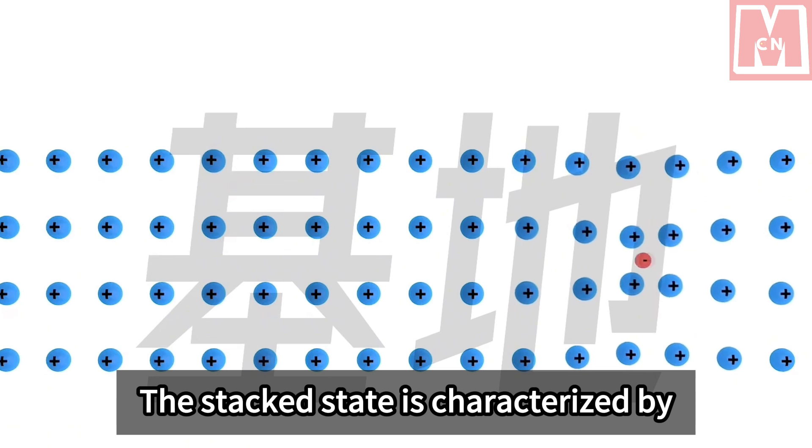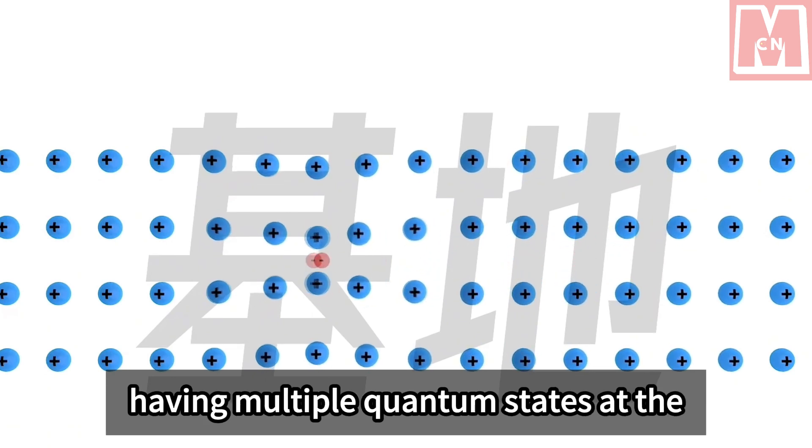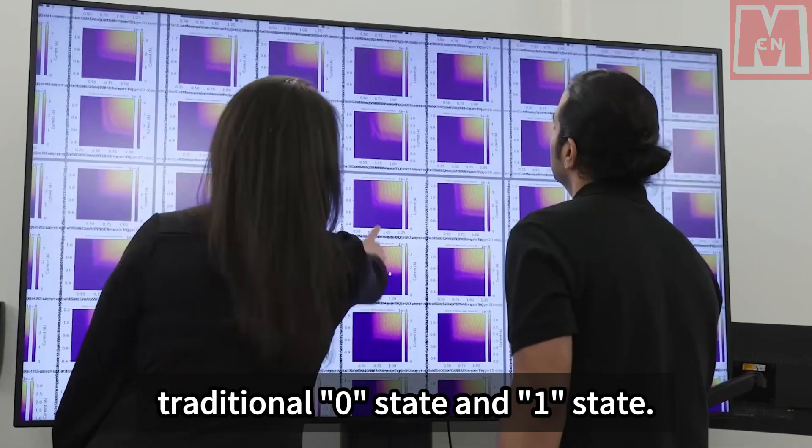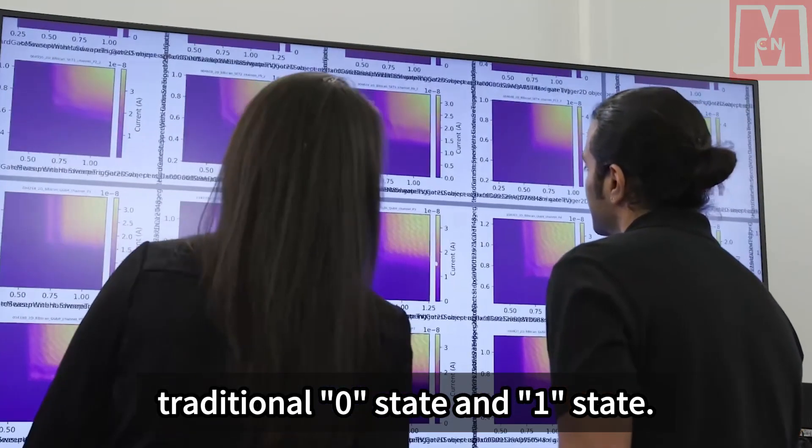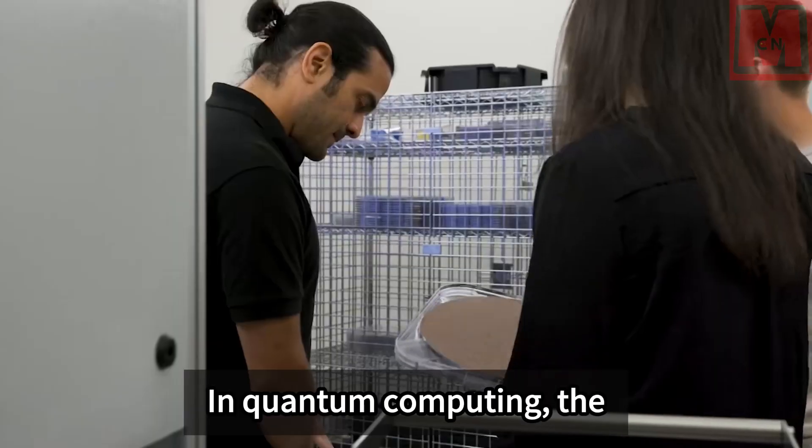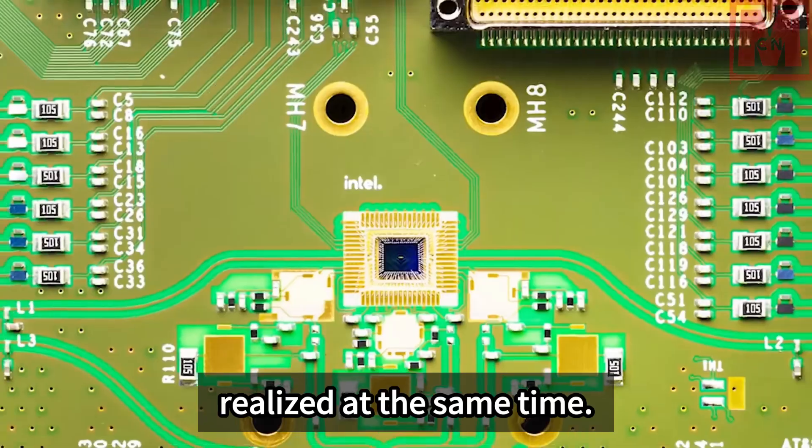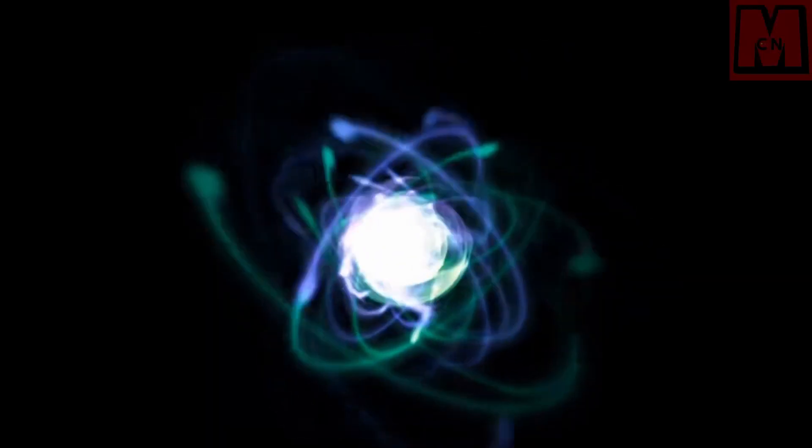The stacked state is characterized by having multiple quantum states at the same time, which is different from the traditional 0 state and 1 state. In quantum computing, the 0 state and 1 can be realized at the same time.